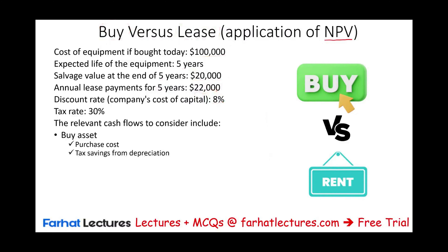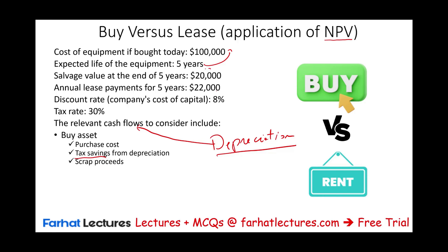If we buy the asset, we're going to have it for five years. And if you have property, plant, and equipment, you are going to have something called depreciation. Depreciation is not cash flow — but depreciation will give you a tax savings, and you will see how when we run the numbers. Also, at the end of five years, we are going to get $20,000 for this asset. Would this be relevant? Of course it would be, because that's a cash inflow. So those are relevant cash flows.